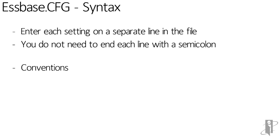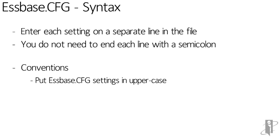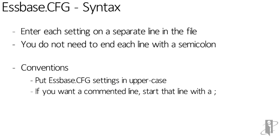There are a couple of conventions most people follow. First, put your sspace.cfg settings in uppercase — it just makes them easier to spot. Second, if you want to add a comment, start that line with a semicolon. You can also use a hashtag or an apostrophe. Sspace looks at that line, tries to find a setting that starts with a semicolon, realizes there isn't one, and just skips to the next line. It will not invalidate when it sees a line it doesn't understand.